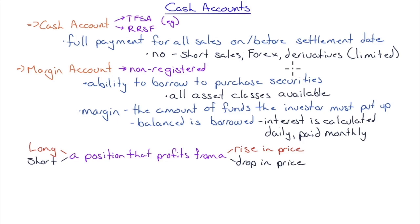All registered accounts (TFSA, RRSP) are cash accounts only. Non-registered accounts can be margin accounts, where you have the ability to borrow to purchase securities and all asset classes are available. However, availability doesn't mean automatic access — when you open a margin account, your broker may restrict forex or derivatives based on your experience level. Interactive Brokers, for example, requires you to affirm experience with derivatives and may even quiz you before granting access.